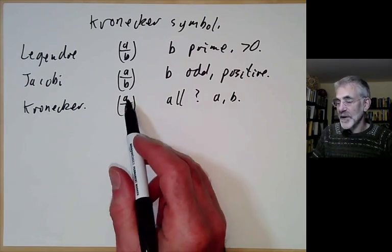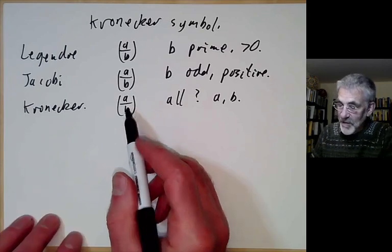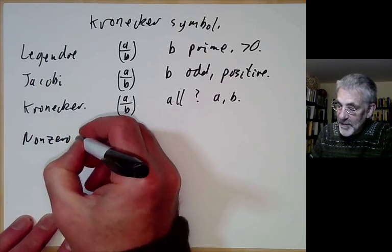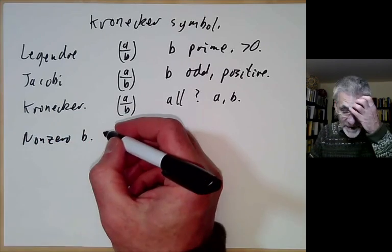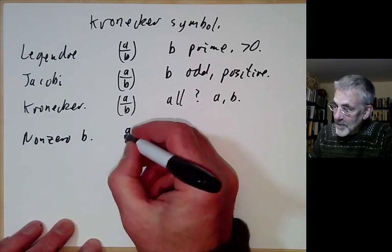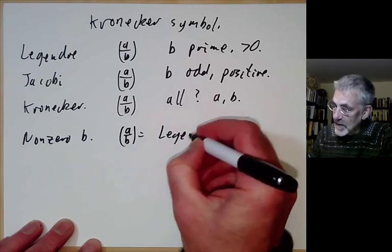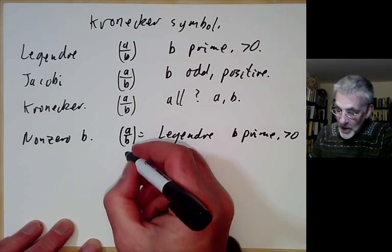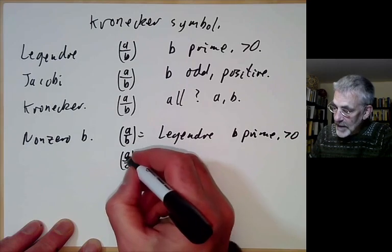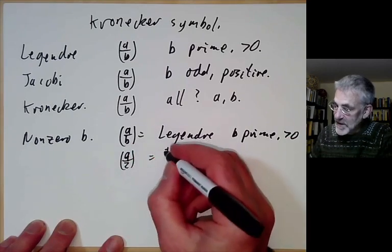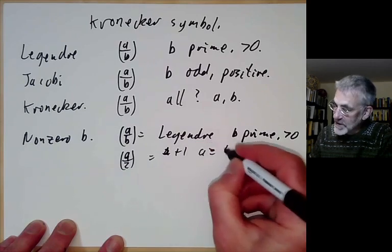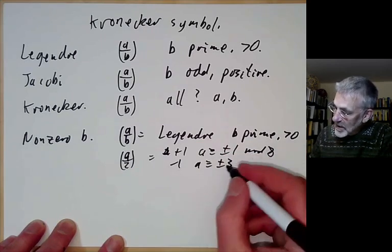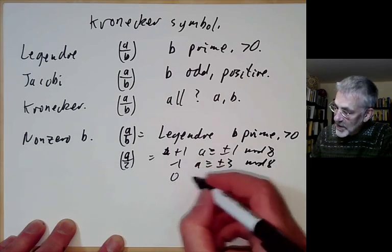The Kronecker symbol is defined for all a and b, although there are rather good reasons for slightly restricting the values. We define it as follows: if b is non-zero, we define (a/b) using the Legendre symbol for b prime and positive. We also need to define (a/2), which is +1 for a ≡ ±1 mod 8, and −1 for a ≡ ±3 mod 8.